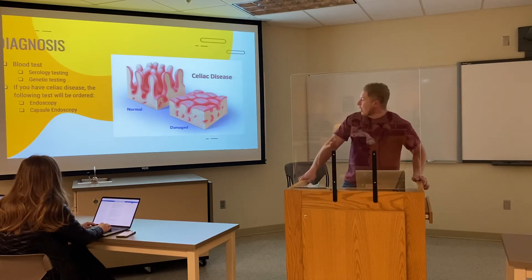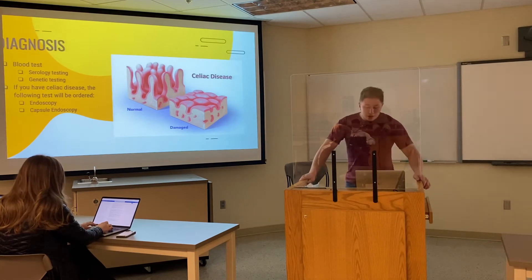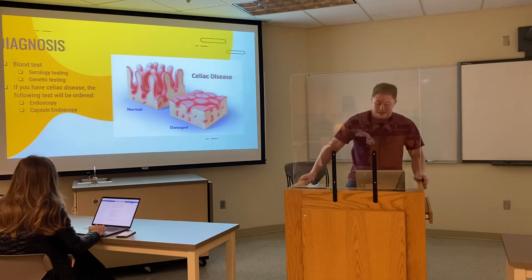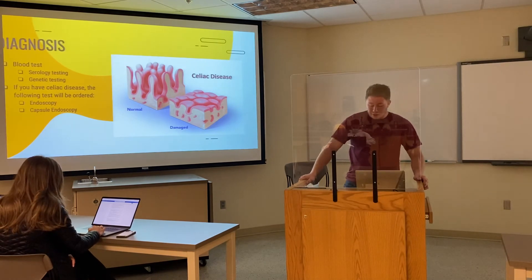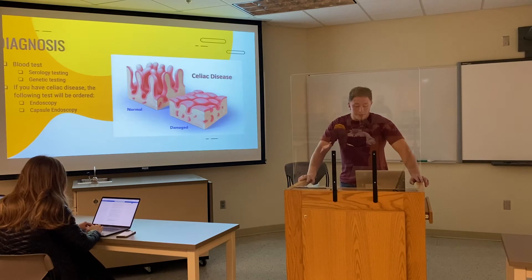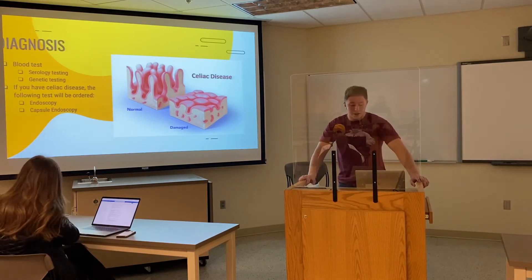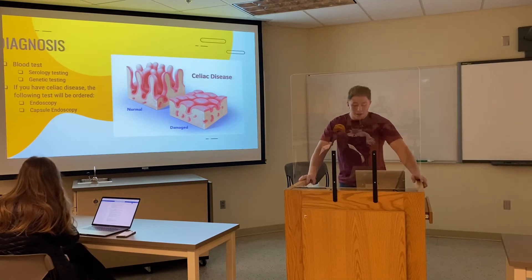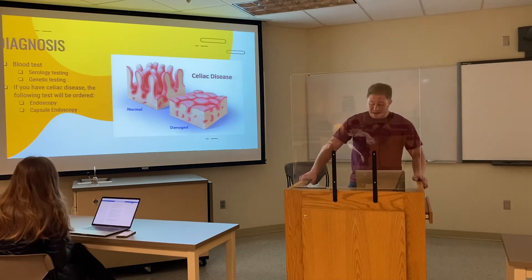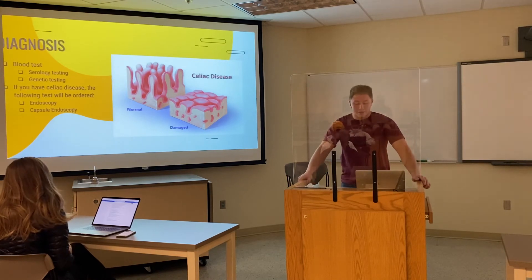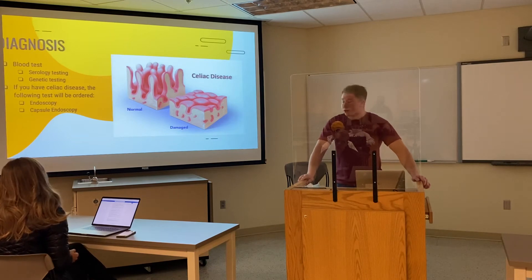If we find out that you have celiac disease, an endoscopy and capsule endoscopy will be ordered. An endoscopy uses a long tube with a tiny camera put into your mouth and passed down your throat, enabling your doctor to view your small intestines and take small tissue samples to analyze the damage to the villi. A capsule endoscopy uses a tiny wireless camera inside a vitamin-sized capsule that you swallow. As the capsule travels through your digestive tract, the camera takes thousands of pictures transmitted to a recorder.